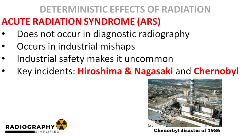Many industrial safety measures have been taken to make such high-dose exposure accidents less common. Recorded tragic incidents in history that led to acute radiation syndrome include the Hiroshima and Nagasaki atomic bomb incidents and the Chernobyl disaster of 1986. A lot of knowledge on acute radiation syndrome was obtained by studying the victims of these incidents.